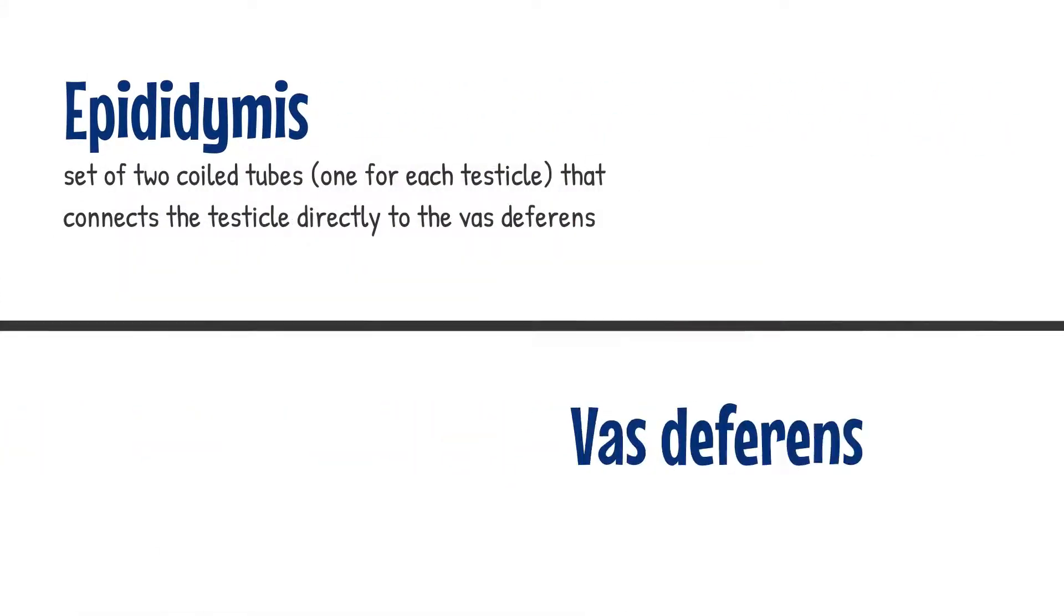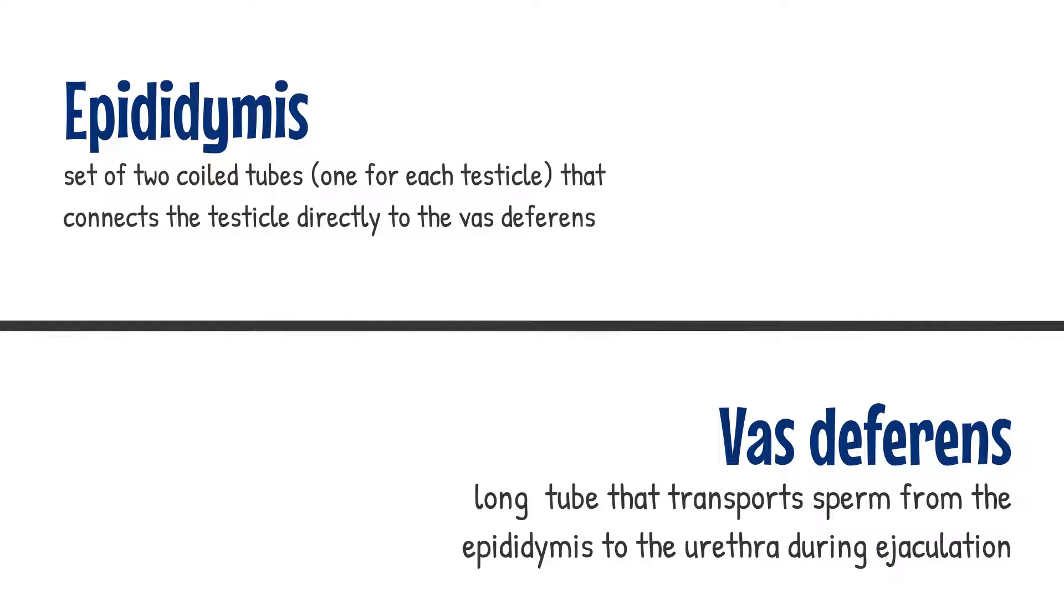Within the male reproductive system, the Epididymus and the vas deferens make up the duct system of the male reproductive organs.